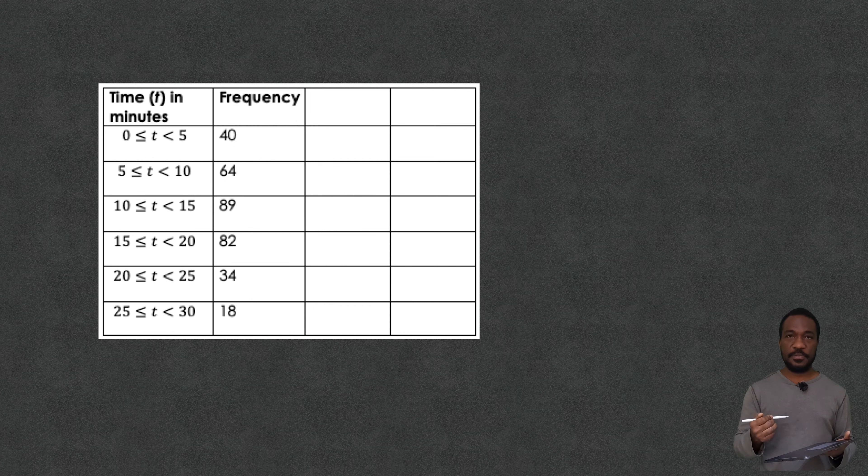I have got other videos on finding averages from frequency tables which is just a tinge bit different. You can see that in the description down below or in the pop out banner coming up at the top of the screen. But anyway let's deal with this group data situation.